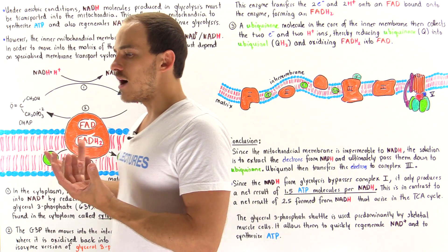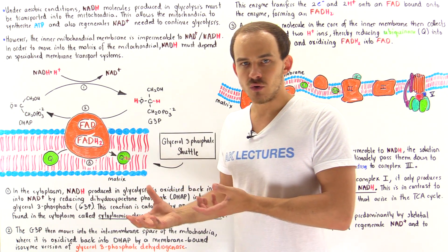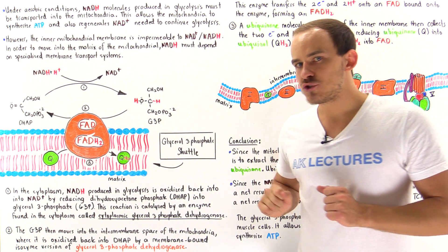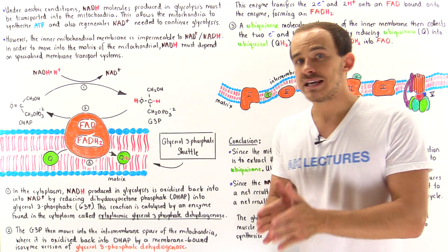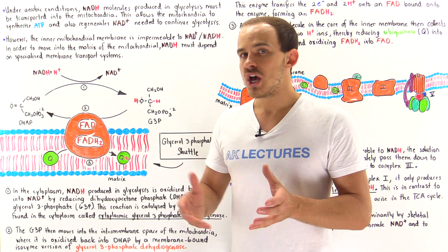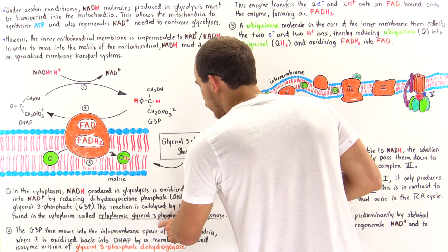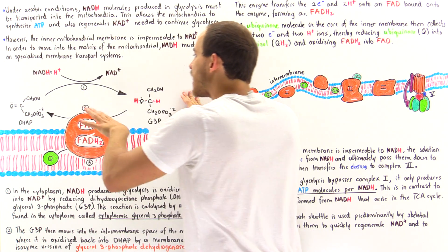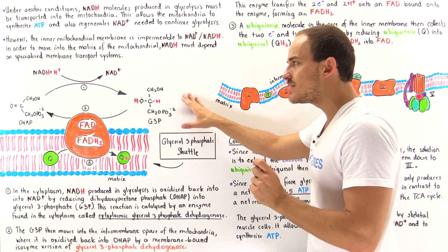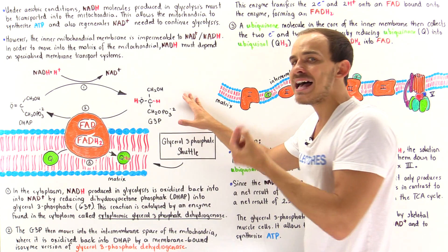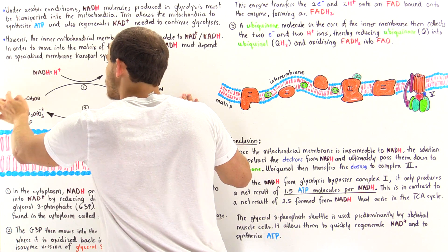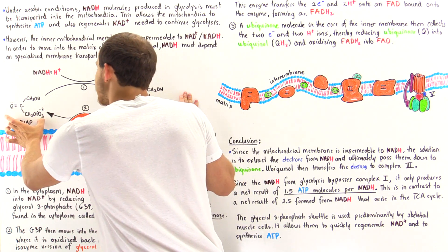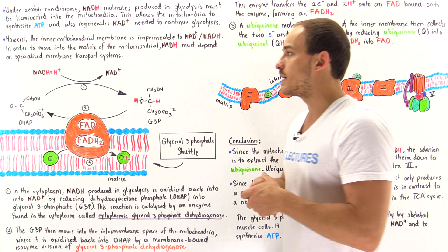Beginning in glycolysis: we oxidize glucose into pyruvate molecules, and in the process we also generate NADH molecules. Once the NADH molecule is formed in glycolysis, it remains in the cytoplasm. A special enzyme known as cytoplasmic glycerol 3-phosphate dehydrogenase oxidizes the NADH back into NAD+, regenerating the NAD+ coenzyme needed for glycolysis, and passes those high-energy electrons from the NADH onto a molecule known as DHAP — dihydroxyacetone phosphate — an intermediate in the glycolytic pathway.